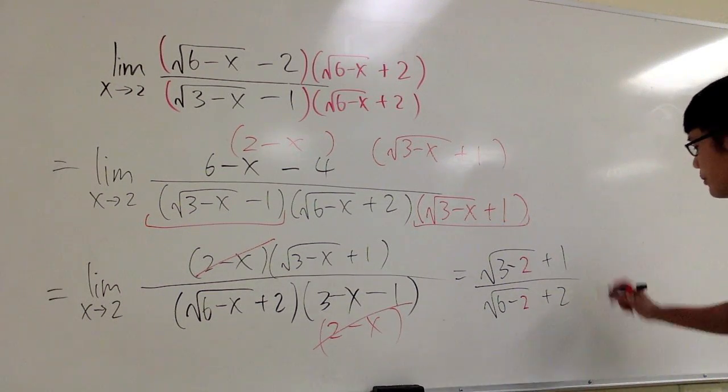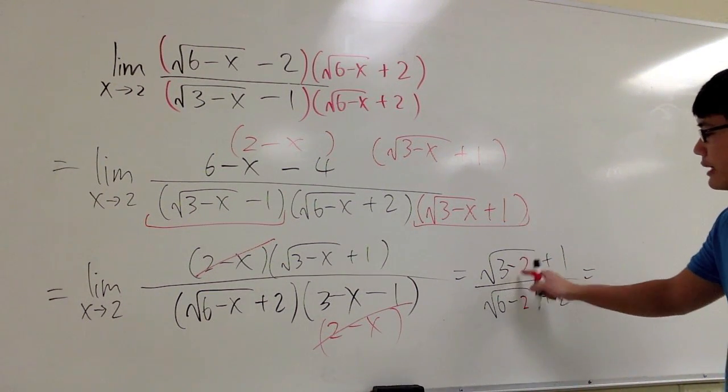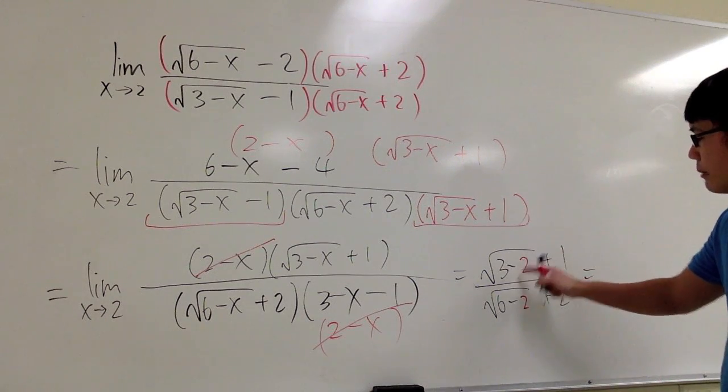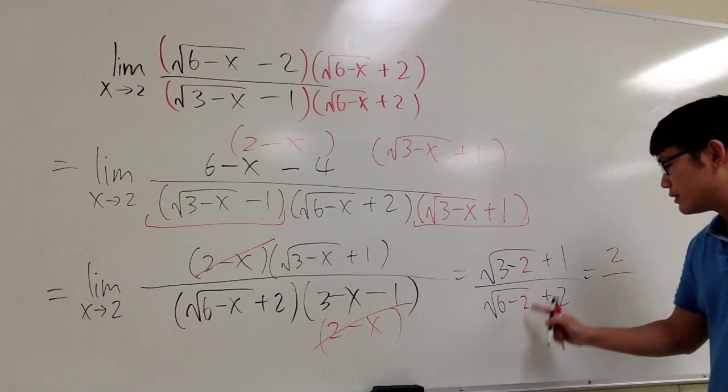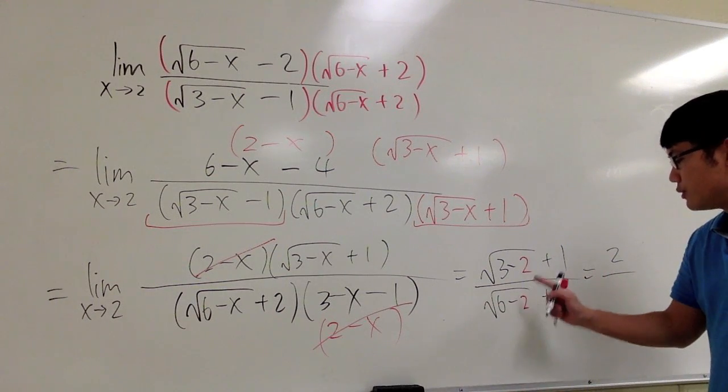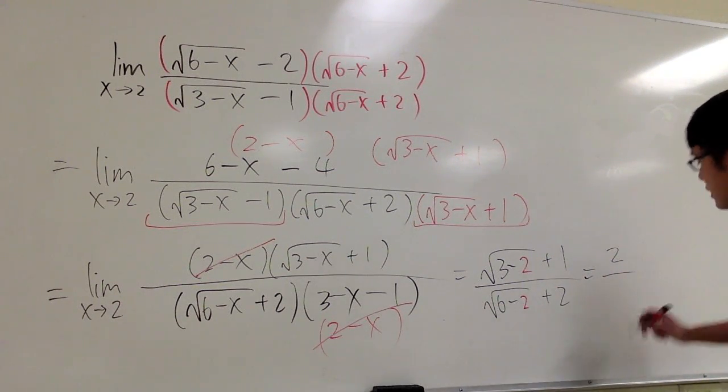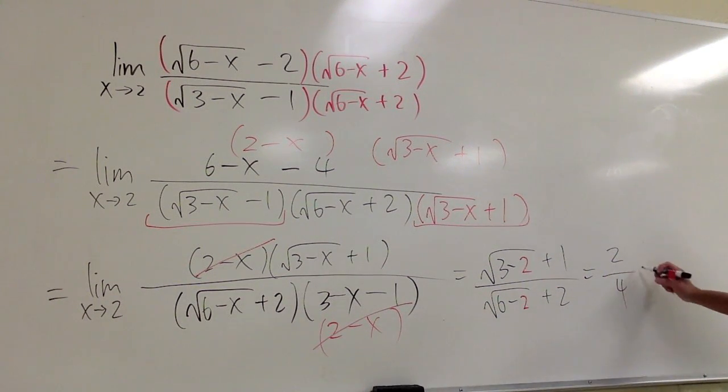And do the usual computation. On the top, 3 minus 2 is 1. Square root of 1 is 1. 1 plus 1 is 2. Over, on the bottom, 6 minus 2 is 4. Square root of 4 is 2. 2 plus 2 is 4. And 2 over 4, of course, you never leave this in calculus class. This is 1 half for the answer.